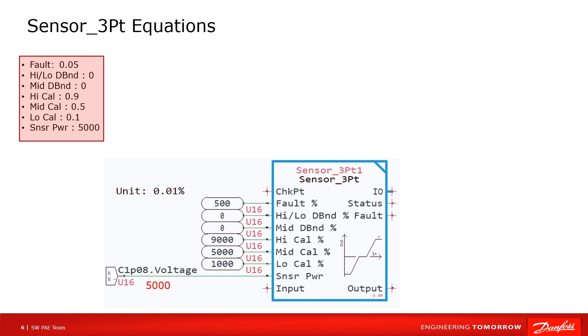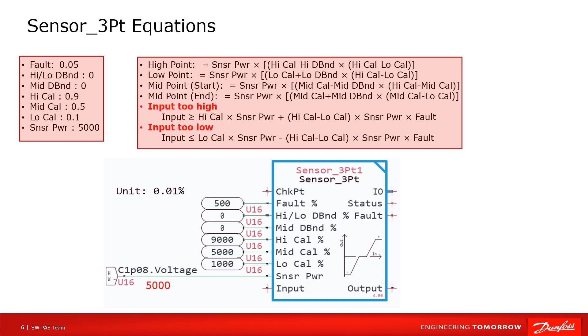Unit of these parameters is 0.01%. So we can take 0.9, 0.5, and 0.1 into formulas. These formulas can be found in user manual. After calculating, we can get the high point 4500, middle point is 2500, low point is 500.